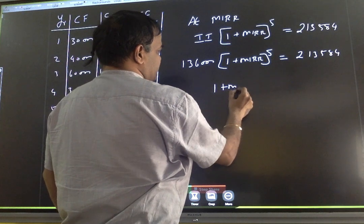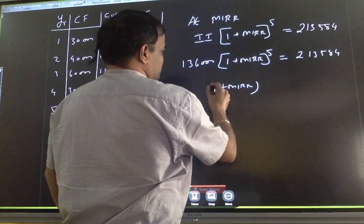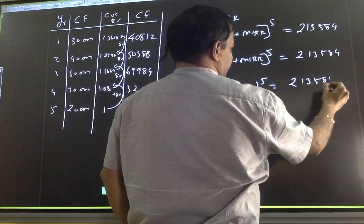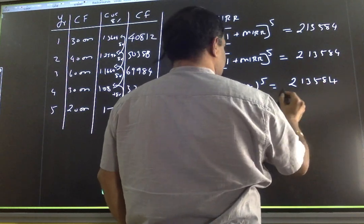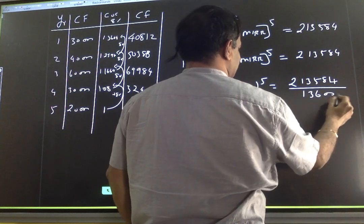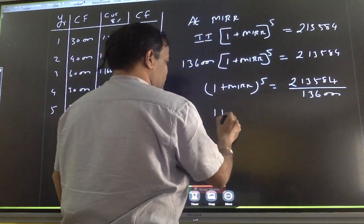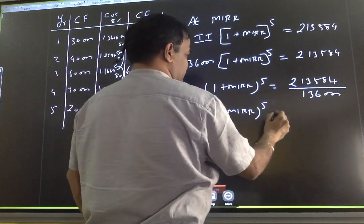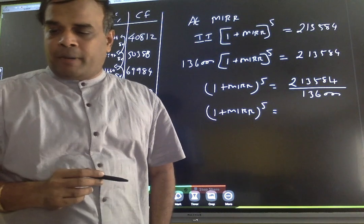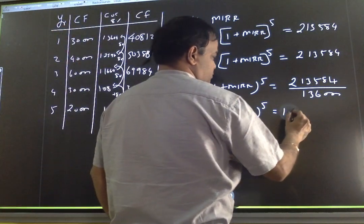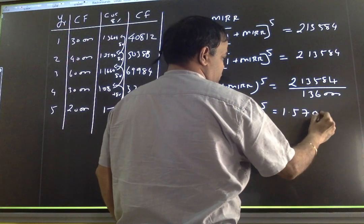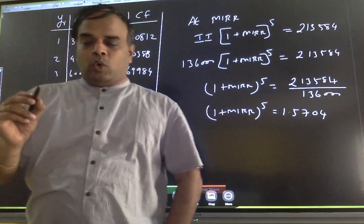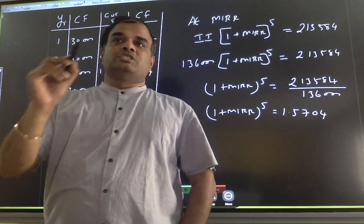So, (1 plus MIRR) to the power 5 is equal to 2,13,584 divided by 1,36,000. Therefore, (1 plus MIRR) to the power 5 is equal to 1.5704. Clear? Now that 1.5704 — we have to use it to identify the MIRR.